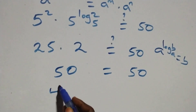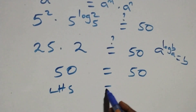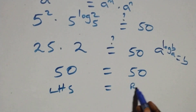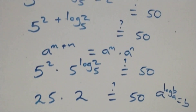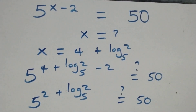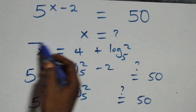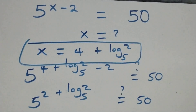We have left hand side equals to the right hand side, and therefore we conclude that x equals to 4 plus log 2 base 5 satisfies this given problem.